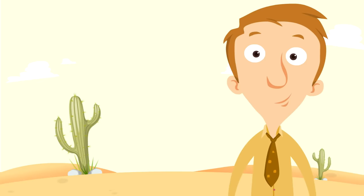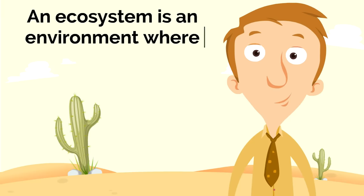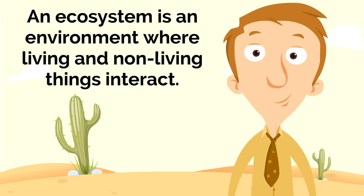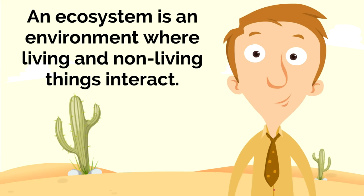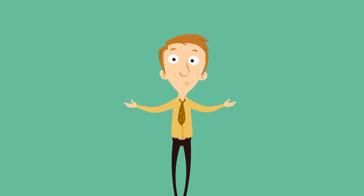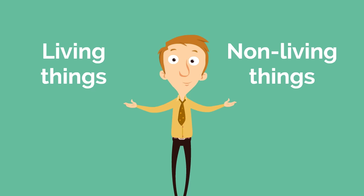So what is an ecosystem? Well, an ecosystem is an environment where living and non-living things interact. An ecosystem is an outdoor environment. Now, we just said that in an ecosystem, living and non-living things interact with each other.